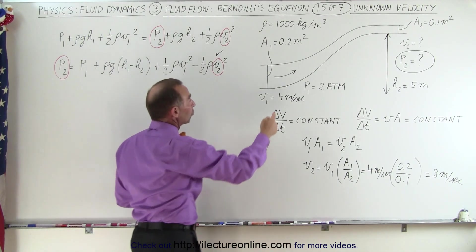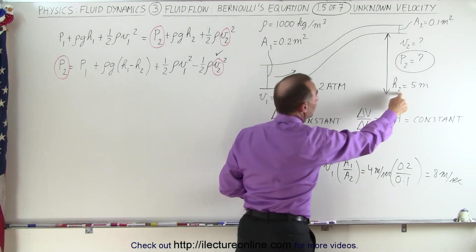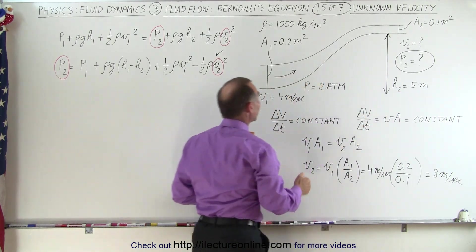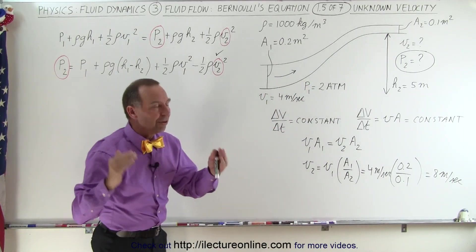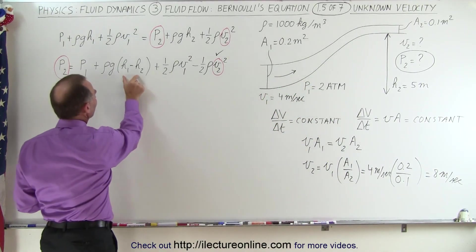You can see that the only thing that matters is the difference between the two heights. Which means that if h1 was 5 then h2 would be 10. If h1 was 10 then h2 would be 15 and so forth. The difference is what matters. In this case the difference is 5.